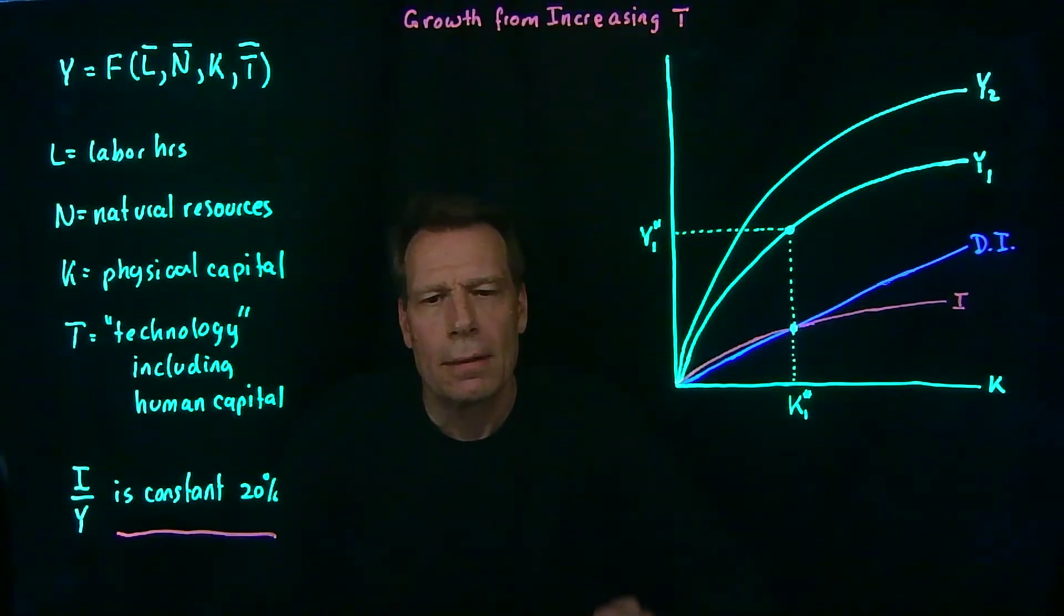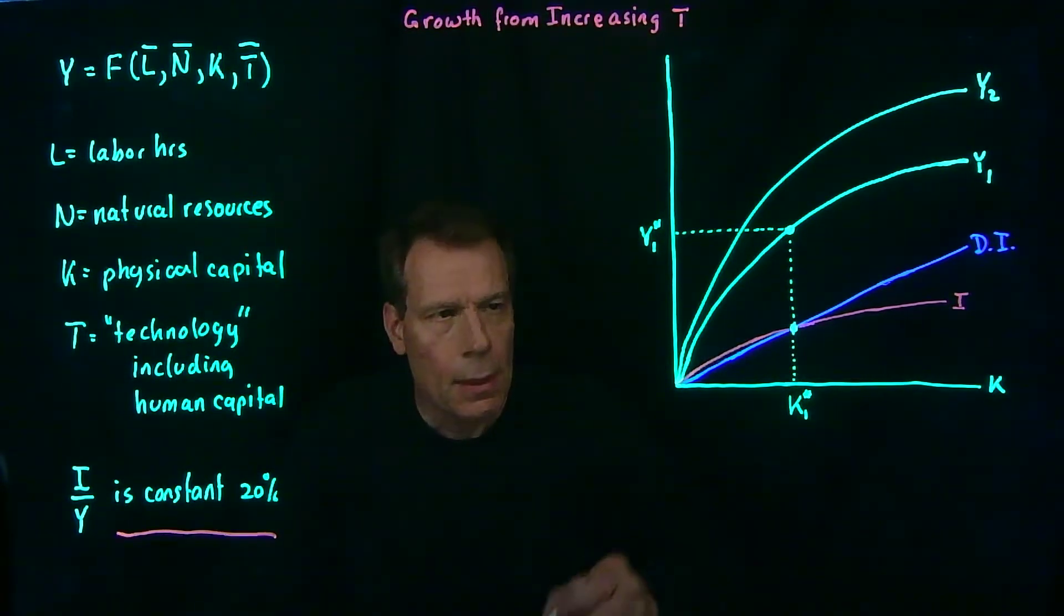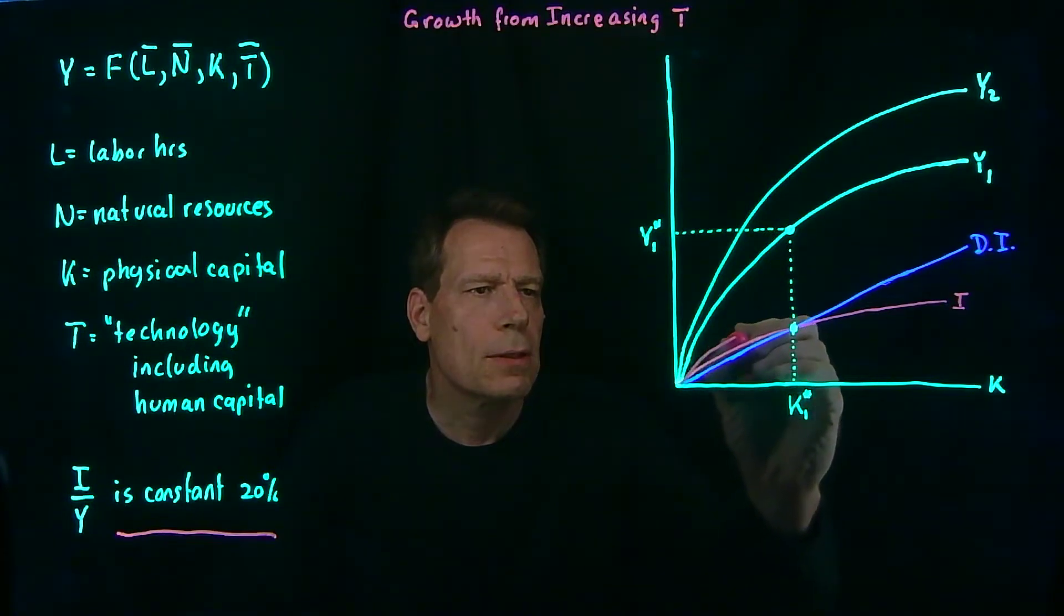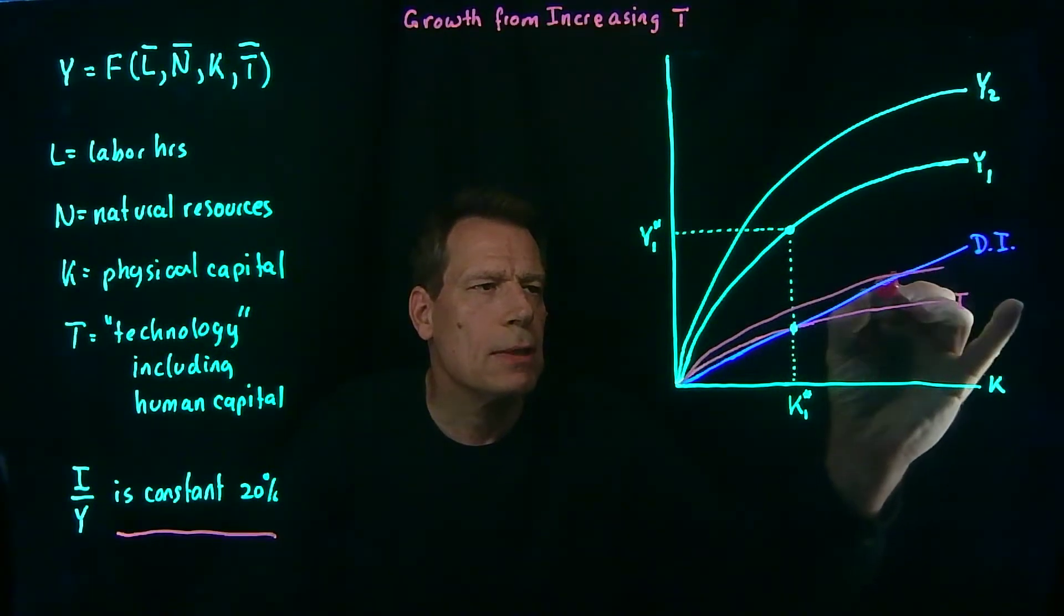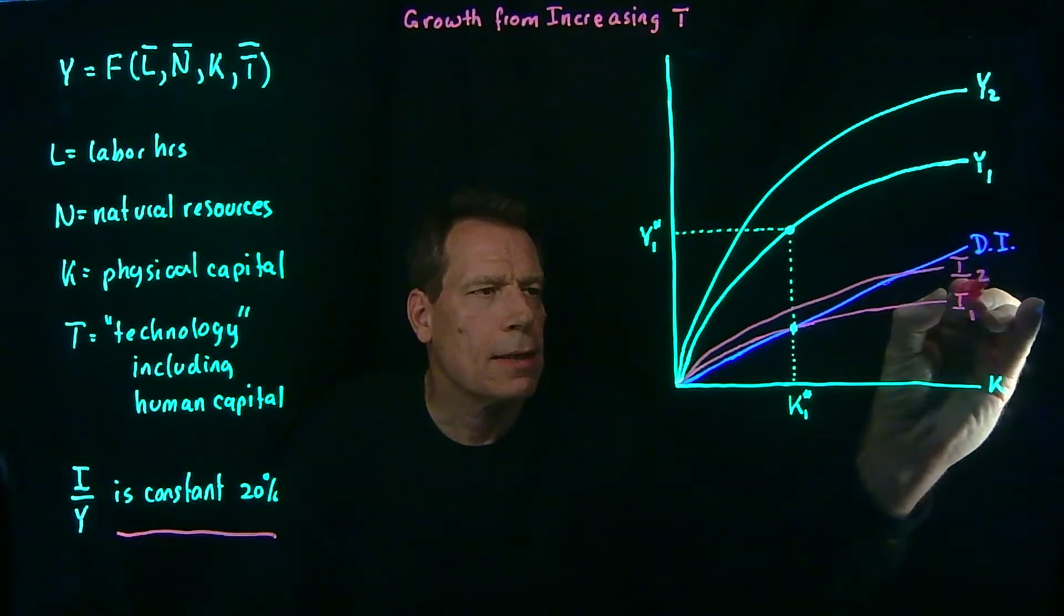if it's constant as a share of GDP, is going to rise. So this investment curve is also going to rotate up. So we're going to rotate that curve up. It's still going to be 20% of GDP, but it's going to be higher. We started with this, and now we're here.